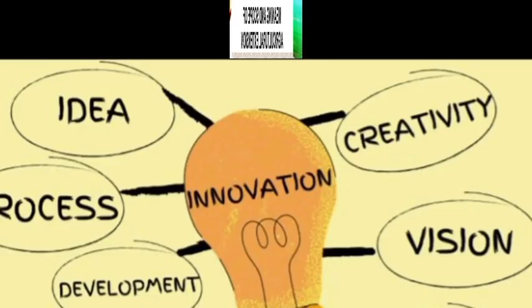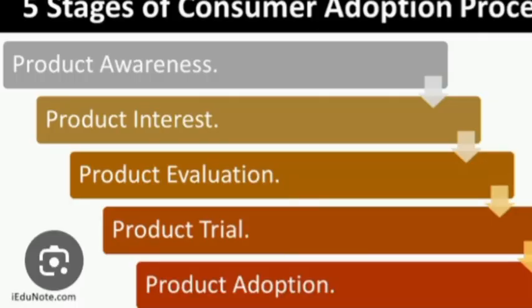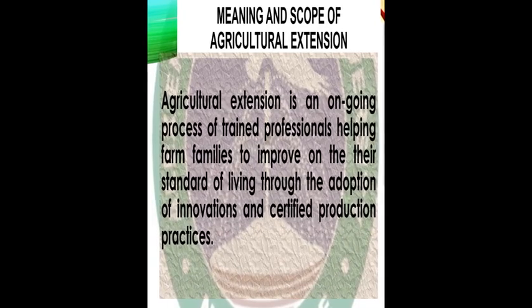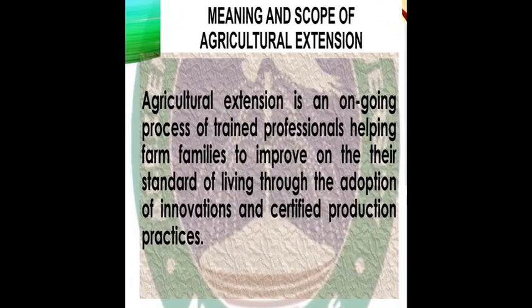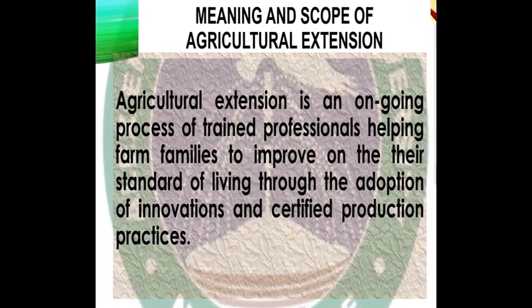Subsequently in this class, we will look at the adoption process from awareness, interest, evaluation, trial, and adoption — before possible discontinuation. The farmer is expected to adopt, utilize, and engage the practices that extension brings, in order to ensure that their standard of living is improved.